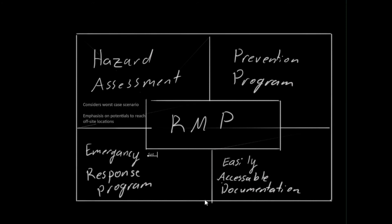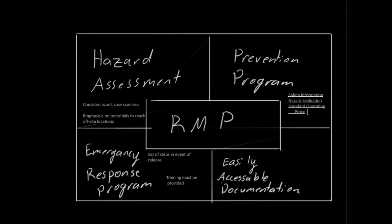The emergency response program is a set of steps that employees at a facility must take in case of a release. Training must be provided, and drills must be performed to revise and improve this plan. The response plan must be communicated and coordinated with a local emergency response plan, and copies must be maintained at the site and be easily accessible. The RMP prevention program is similar to the PSM prevention program and shares many elements in common, including process safety information, hazard evaluation, standard operating procedures, training, pre-startup review, maintenance, management of change, accident investigations, emergency response, safety audits, and risk assessment.